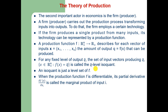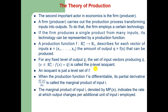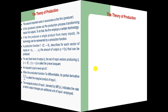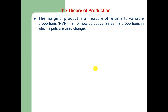When the production function is differentiable, its partial derivative is known as the marginal product of input i, and the marginal product is equal to the change in total output due to a one-unit change in input i. The marginal product of input i is denoted by MP, and it indicates the rate at which output changes per additional unit of the i-th input implied in the production process. Just like marginal utility in consumption theory, the marginal product is a measure of returns to variable proportion — it shows how output varies as the proportions in which various inputs are used change.